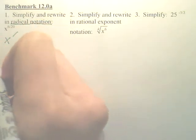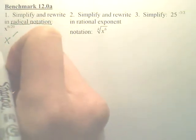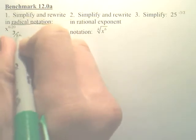So 6 over 20, what goes into both 6 and 20? 2. That would be 3 and 10.